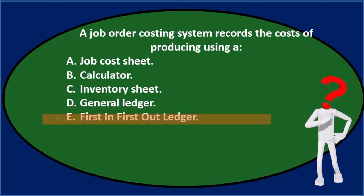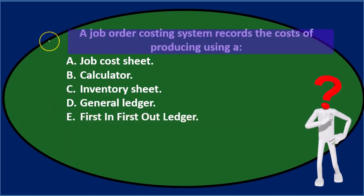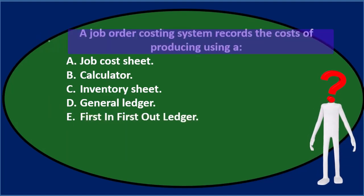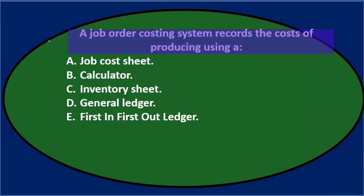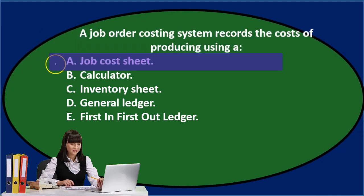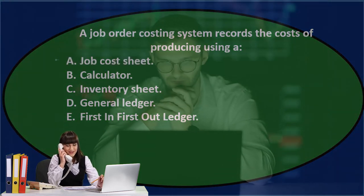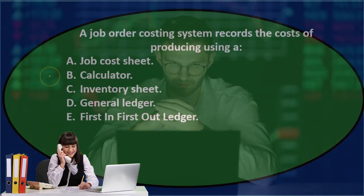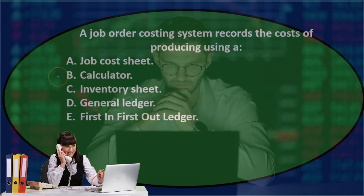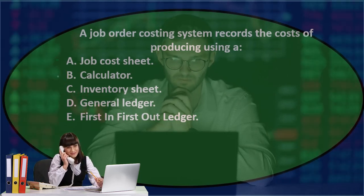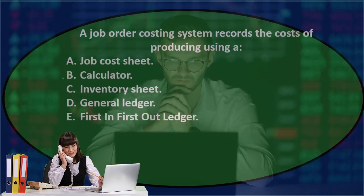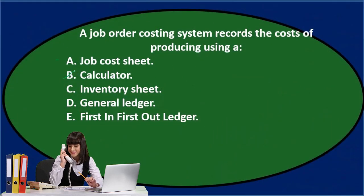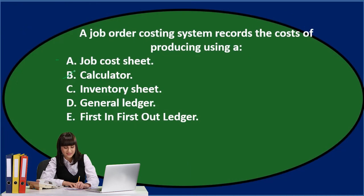Let's go through this using the process of elimination. A job order costing system records the cost of producing using — A, a job cost sheet. That sounds familiar and reasonable; we use a job cost sheet in a job costing system to record costs. I'll keep that. B says a calculator — technically you do use a calculator, but that's probably not the most correct answer here. C says inventory sheet, which sounds kind of reasonable; I'll keep that for now.